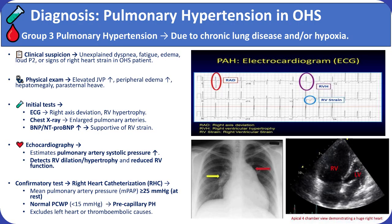Pulmonary hypertension in OHS is classified as group 3 pulmonary hypertension, resulting from chronic lung disease and hypoxia. It should be suspected in patients with unexplained dyspnea, fatigue, edema, loud P2, or signs of right heart strain. Physical findings include elevated jugular venous pressure, peripheral edema, hepatomegaly, and a parasternal heave in cor pulmonale or right heart failure.